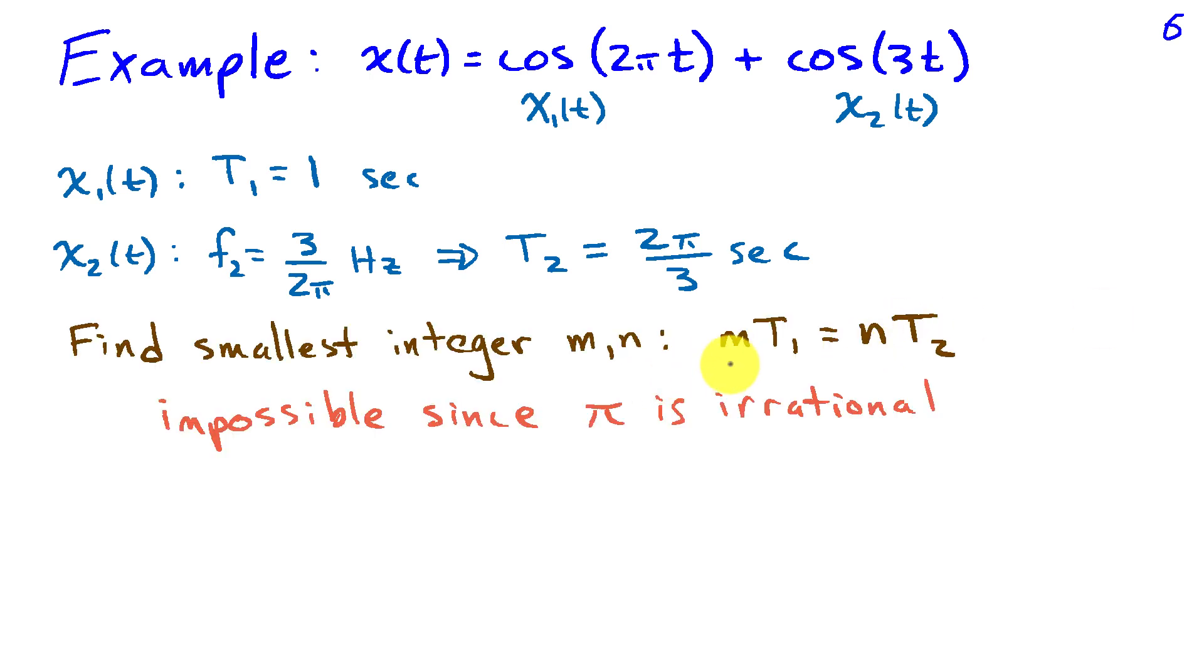I'll write that as looking for m and n such that m times t1 is equal to n times t2. Now in this case because t2 involves pi and t1 doesn't, this is not possible because pi is an irrational number.